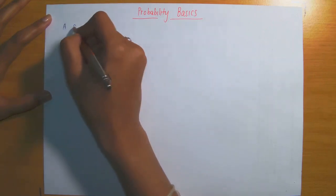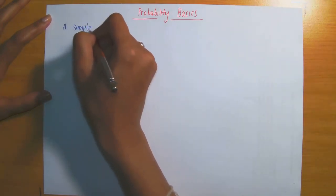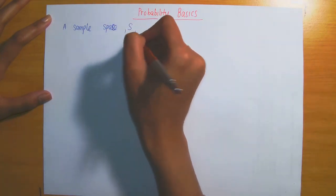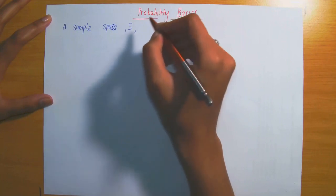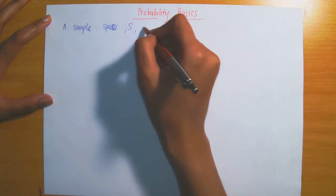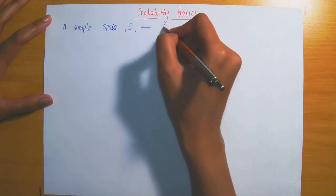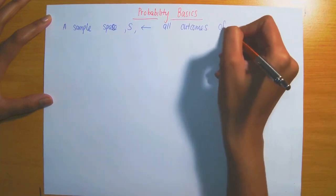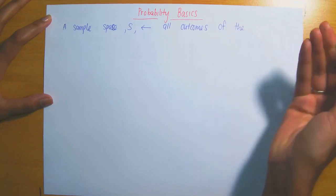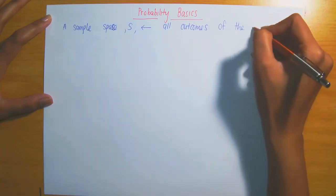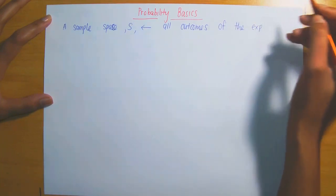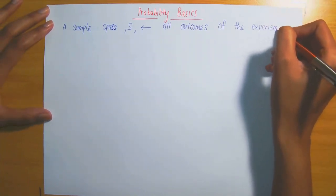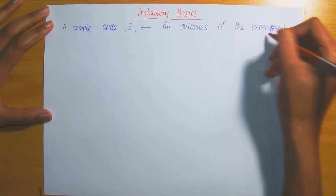A sample space, S, is basically a set consisting of all possible outcomes. This has all the outcomes of the experiment that we are trying to study. So the sample space consists of everything that could occur.